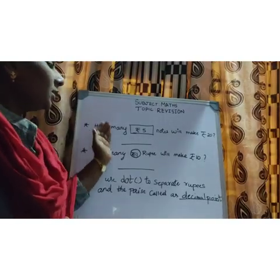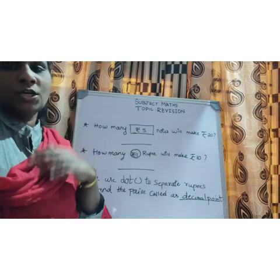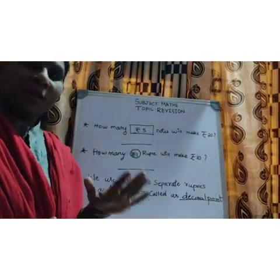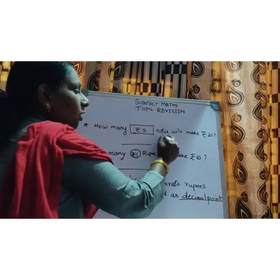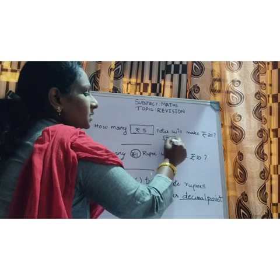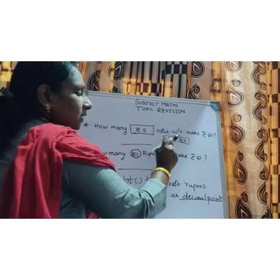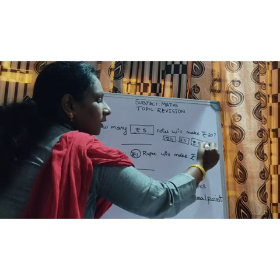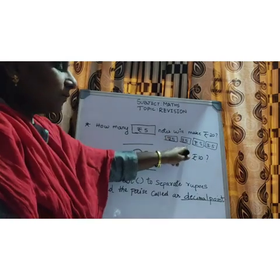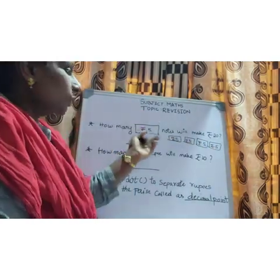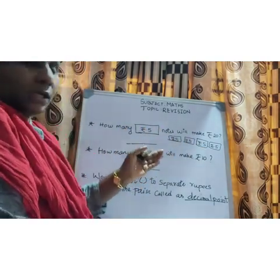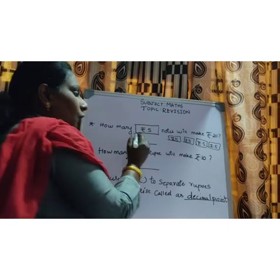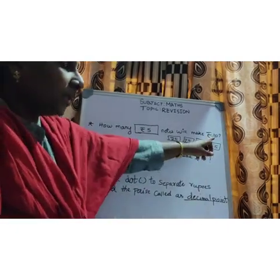Next one children: how many 5-rupee notes will make rupees 20? In 20 rupees, how many 5 rupees are there? You can find out by adding — 5 plus 5 is 10, 10 plus 5 is 15, 15 plus 5 is 20. Because you are adding the same number repeatedly, you can use multiplication: 5 ones are 5, 5 twos are 10, 5 threes are 15, 5 fours are 20. So there are 4 five-rupee notes to make 20 rupees.